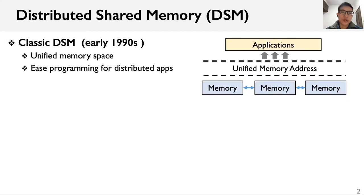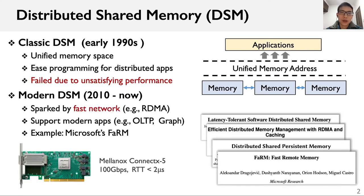Distributed Shared Memory received considerable attention at the end of last century, since it can provide a unified memory space, enabling easy programming for distributed applications. However, classic DSM ran its course due to unsatisfying performance on top of low-speed networks. Recently, with emerging fast network stacks such as RDMA and DPDK, DSM has become popular again. Modern DSM supports new applications such as LTP and graph computation. For example, Microsoft has built an RDMA-based DSM named FaRM.